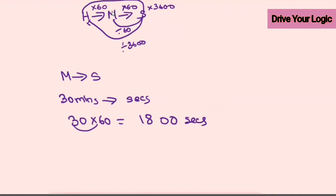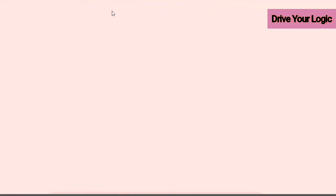Now we return — the opposite direction. We've done all the multiplication; now we do division. For example, to convert second to minute, you're going back, so divide by 60.